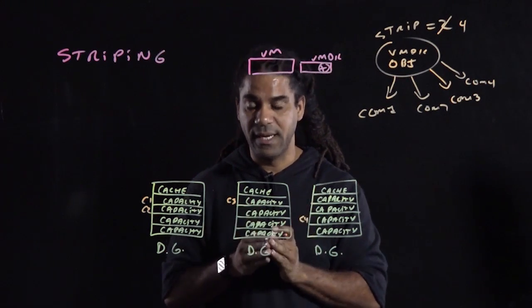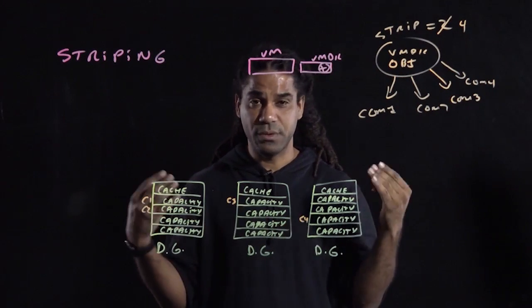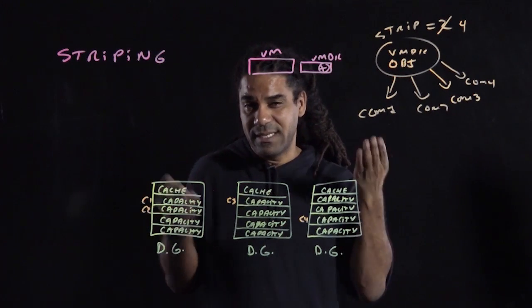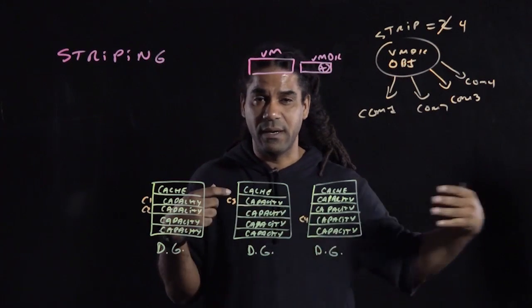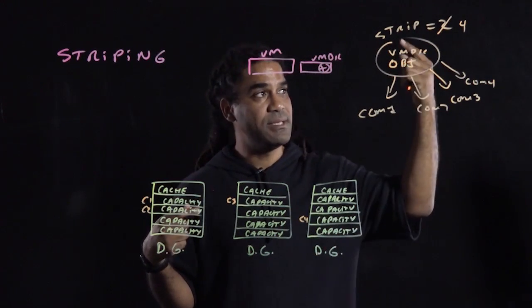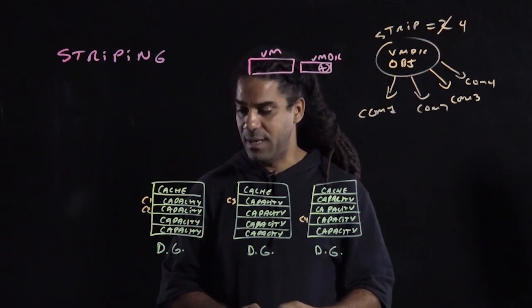vSAN will decide which is the best place to put those components, so that it makes a balancing act of performance for the entire cluster and meeting the SPVM policy that you put in for that VM.